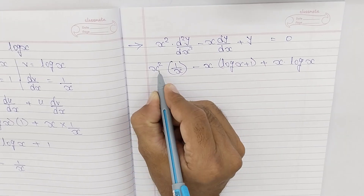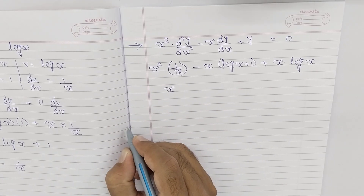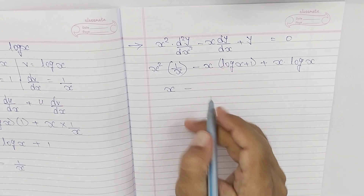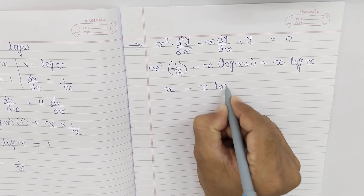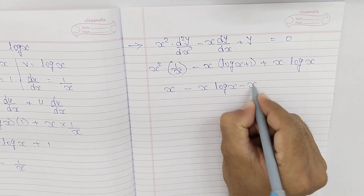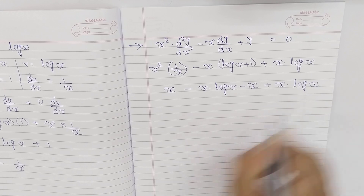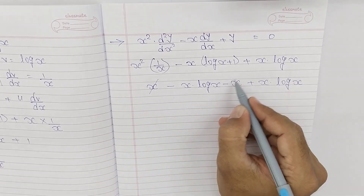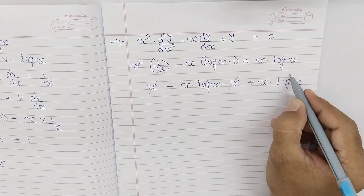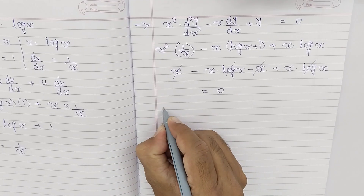Ab x²/x mein single x cancel hoga, toh x bachega. Phir minus x ko multiply karenge: minus x·log(x) minus x·1, plus x·log(x). Toh dekhiye: +x aur -x cancel hogaya, -x·log(x) aur +x·log(x) bhi cancel hogaya. Toh baaki value bachi 0.